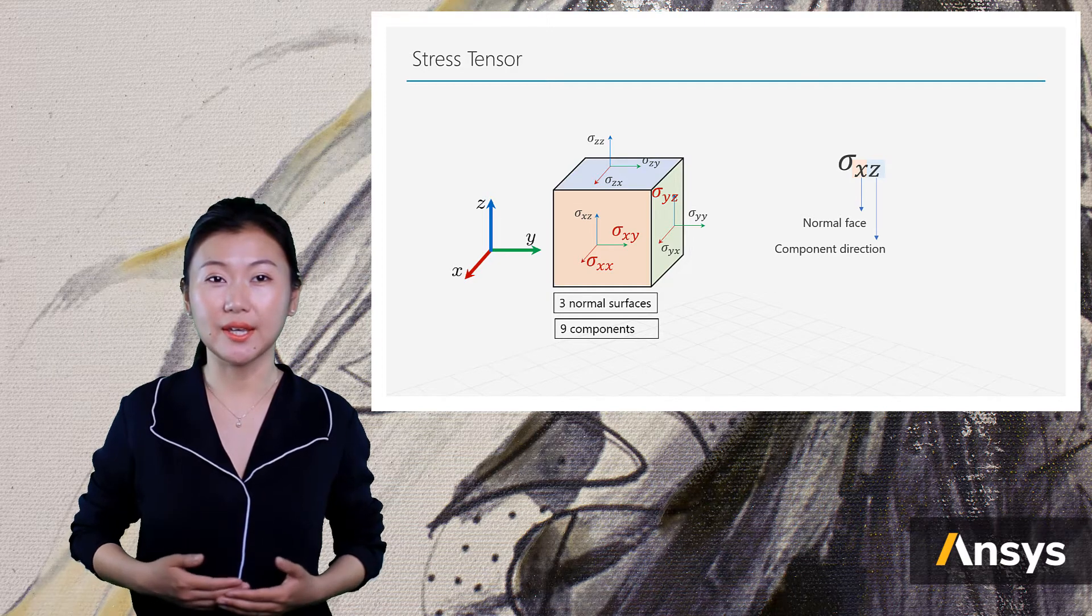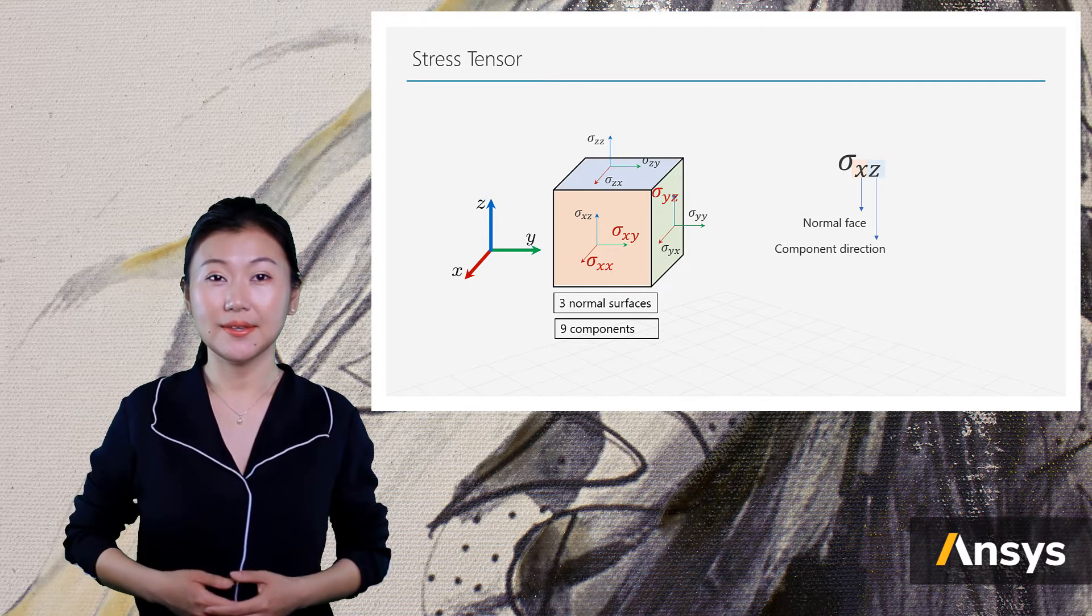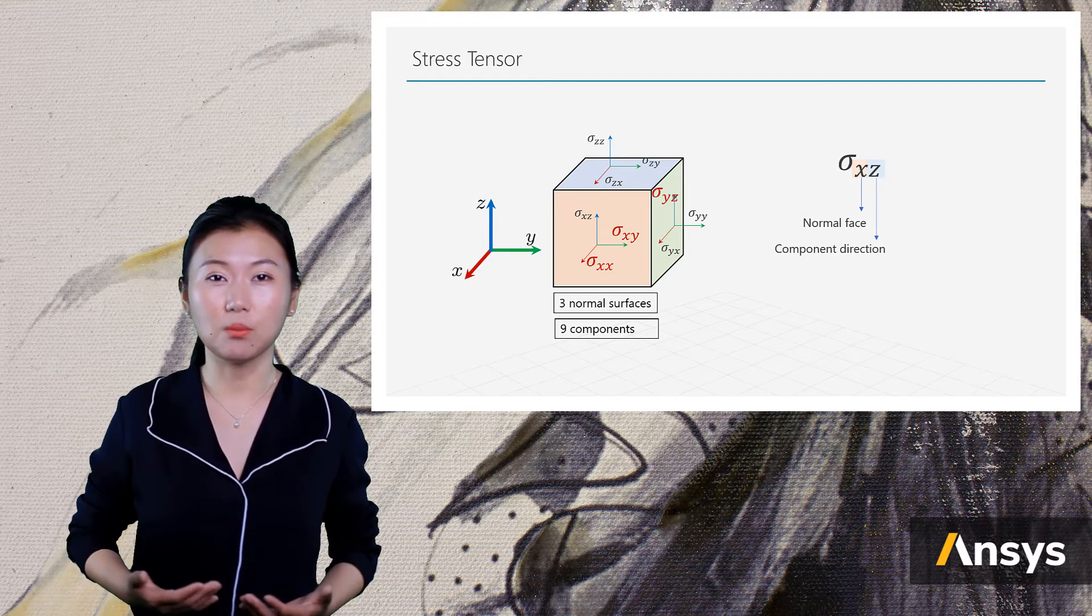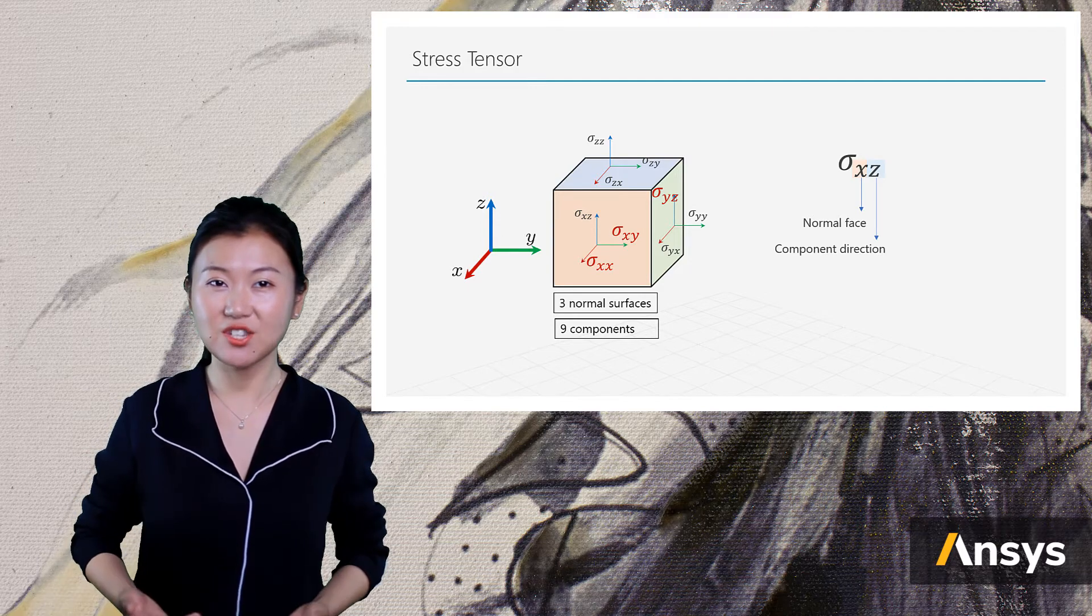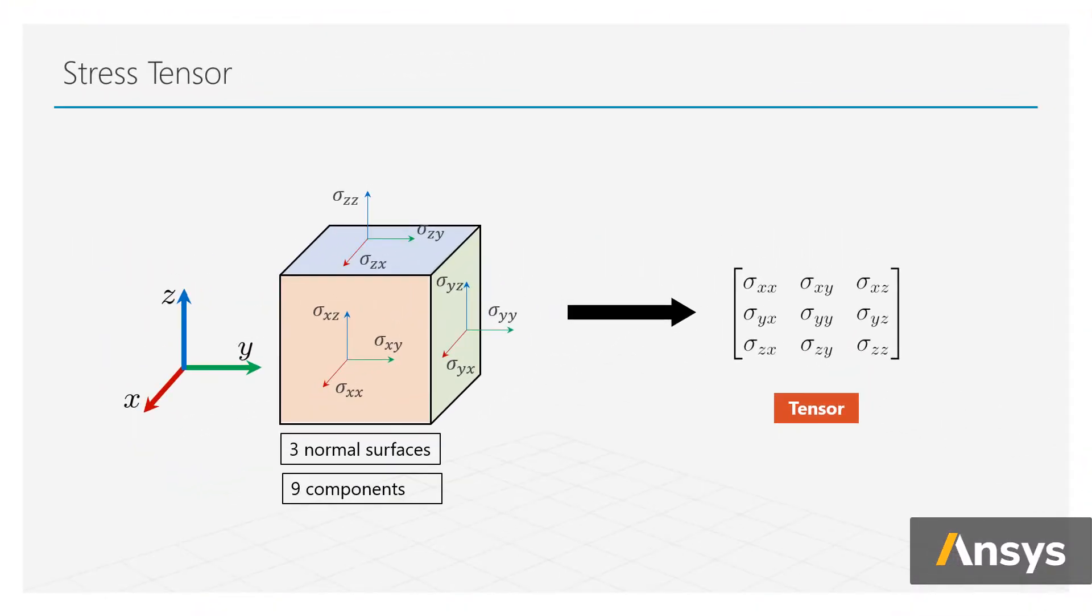These nine components naturally form a mathematical object, tensor, which is written as a three by three matrix. The first row of this stress tensor are components on the normal face x, second row are the ones on normal face y, and the third row are the ones on normal face z.